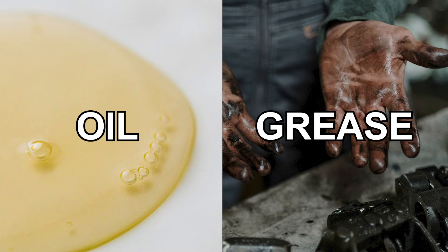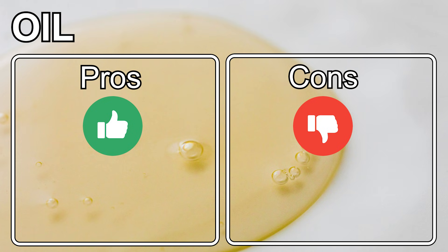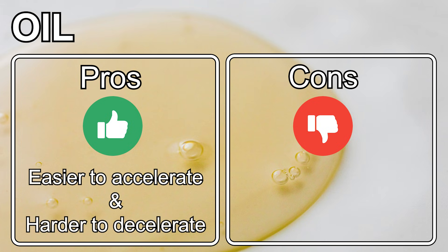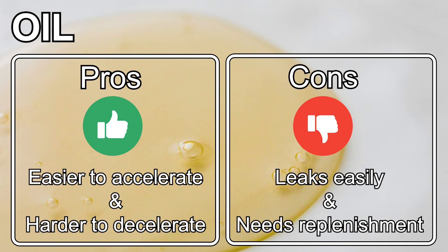Of the two types of lubricants, oil has lower viscosity, making it easier to accelerate and harder to decelerate. However, because it leaks easily from the bearing, it needs to be replenished regularly.